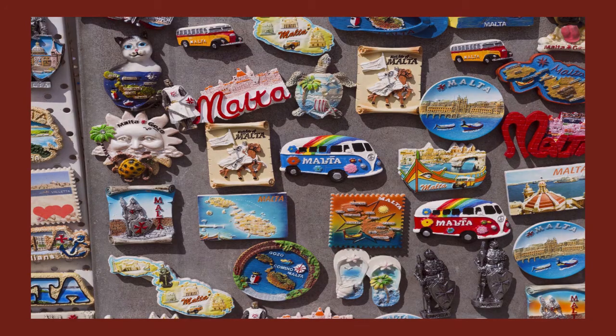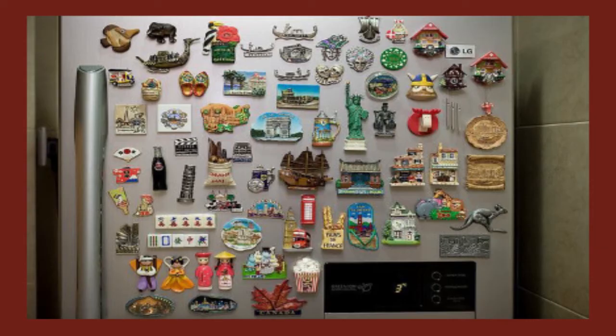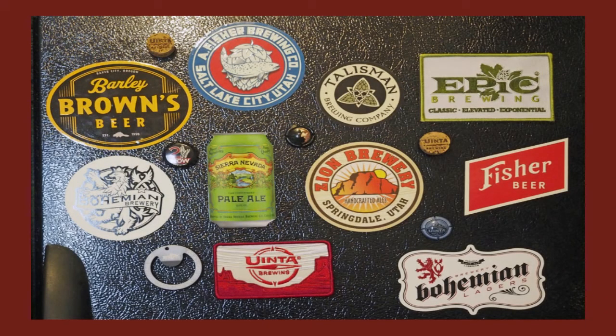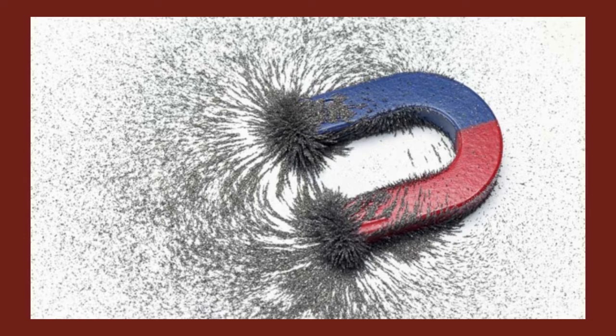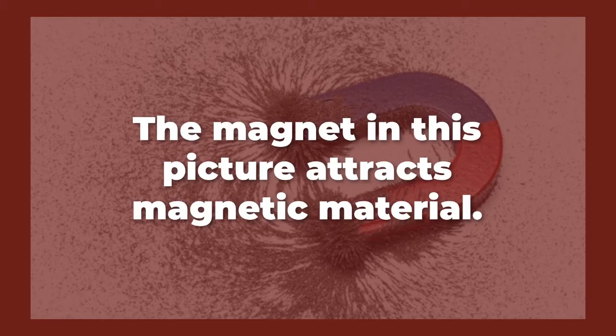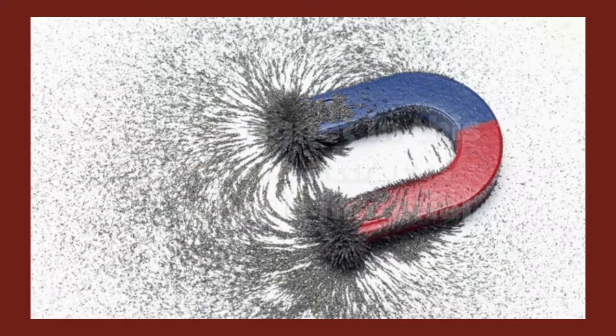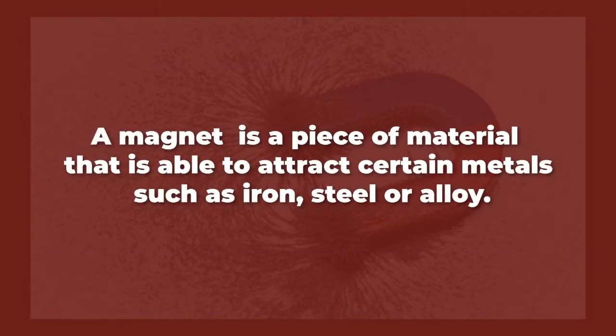Have you already seen a magnet? I am sure it is a yes. An everyday example is a refrigerator magnet. The different refrigerator magnets are awesome! The magnet in this picture attracts magnetic material. A magnet is a piece of material that is able to attract certain metals such as iron, steel, or alloy.